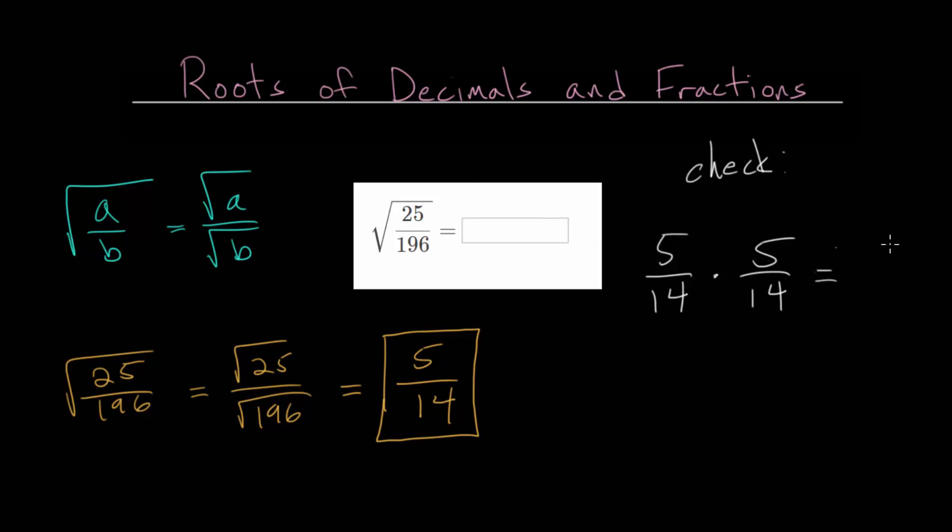And we know 5 times 5, that is 25. And 14 times 14, that is 196. And you can check this with a calculator. So this worked out, we got back what we expected. So we can feel confident that this 5/14 would be our final answer, or would be the square root of this fraction.